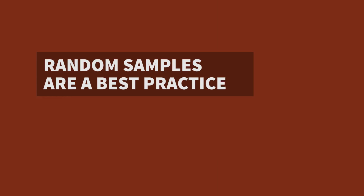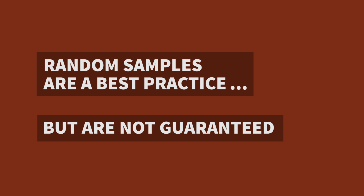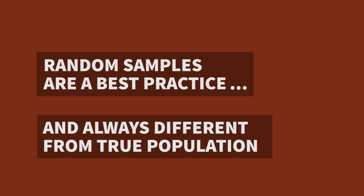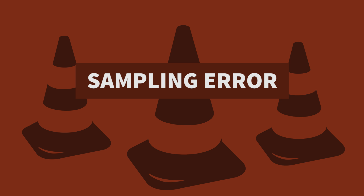Taking probability samples of large populations is considered common practice in the social sciences. Although a random selection process is generally the best way of getting a representative sample from a population, it doesn't guarantee a perfect sample. We must acknowledge that even the best random samples will always be a little different from the true population. We call that sampling error. It occurs when we take a random sample rather than observe every subject of a population.